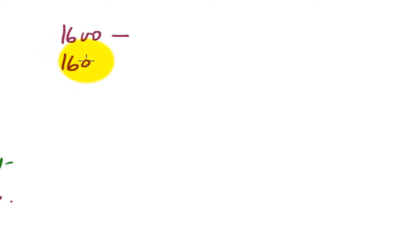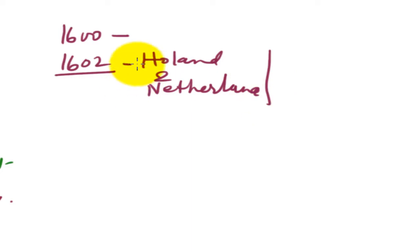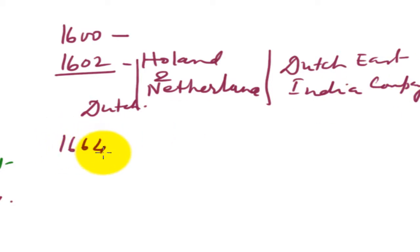In 1602, the Holland and the Netherlands, these two are combinedly known as Dutch. So the Dutch East India Company came in existence. Dutch East India Company in 1602. And 1664, it was the French East India Company.